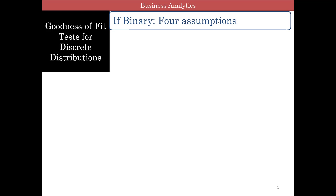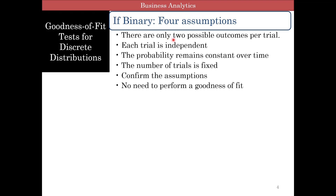Let's talk about goodness of fit tests and different discrete distributions. The first one is binary. In a binary distribution, you have four assumptions: there are only two possible outcomes per trial — yes or no, success or failure; each trial is independent; probability of success or failure remains constant; and the number of trials are fixed. Confirm these four assumptions and there's really no need to perform a goodness of fit test. We'll talk about binomial distribution with an example.